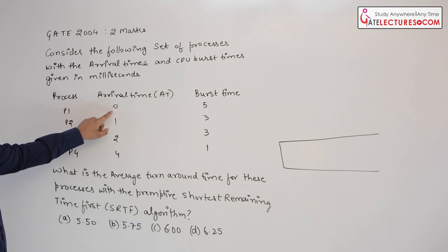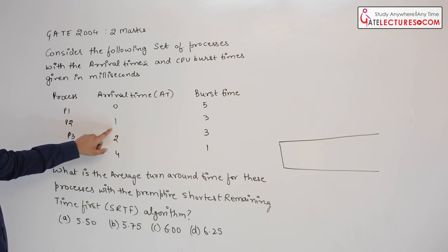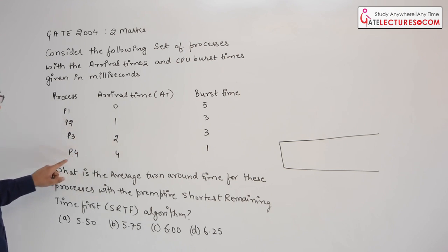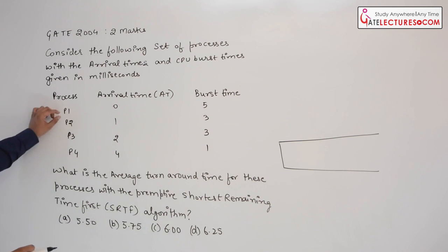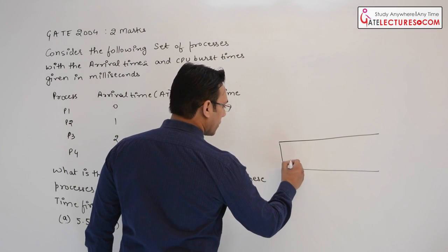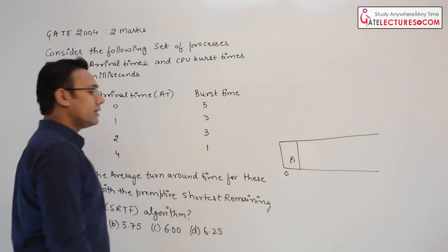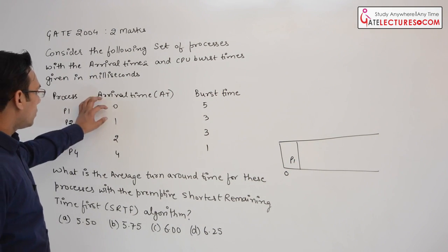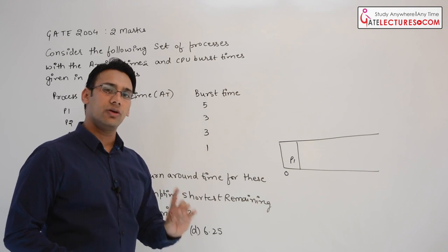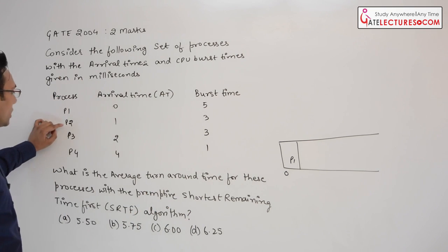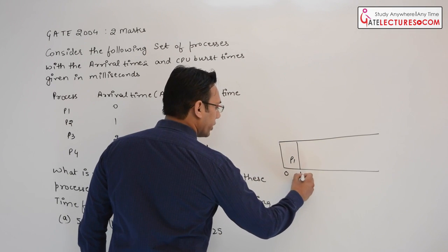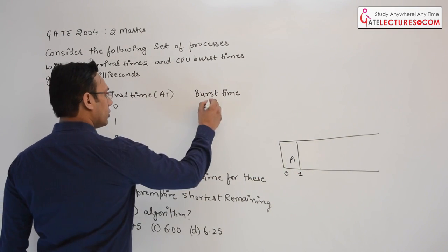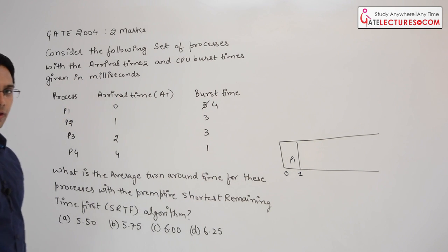Process P1 is arriving at time 0, P2 at time 1, P3 at time 2, and P4 at time 4. Since it is the shortest remaining time first algorithm, at time 0 only P1 is available, so we execute P1 for 1 unit of time. After 1 unit, a new process P2 is coming, so we preempt P1 — the remaining burst time of P1 is now 4.